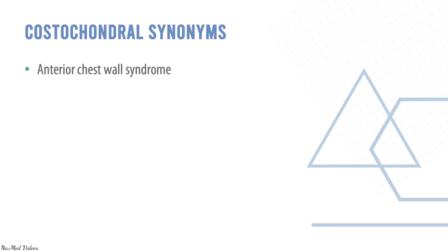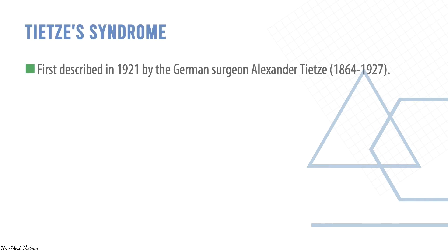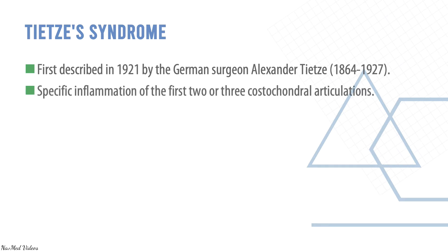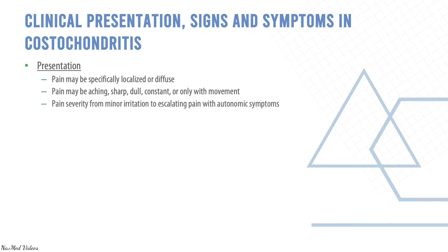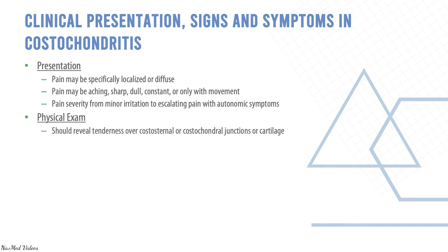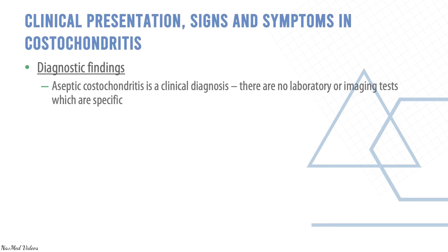Synonyms for this condition include anterior chest wall syndrome, costo-sternal syndrome, chest wall syndrome, costo-sternal chondrodynia, and Tietze syndrome. Tietze was first described in 1921 by German surgeon Alexander Tietze — it involves specific inflammation of the first two to three costochondral articulations. Pain may be aching, sharp, dull, constant, or only with movement. Physical exam should reveal tenderness over the costo-sternal or costochondral junctions. The crowning roost maneuver and horizontal arm flexion tests are used to diagnose.